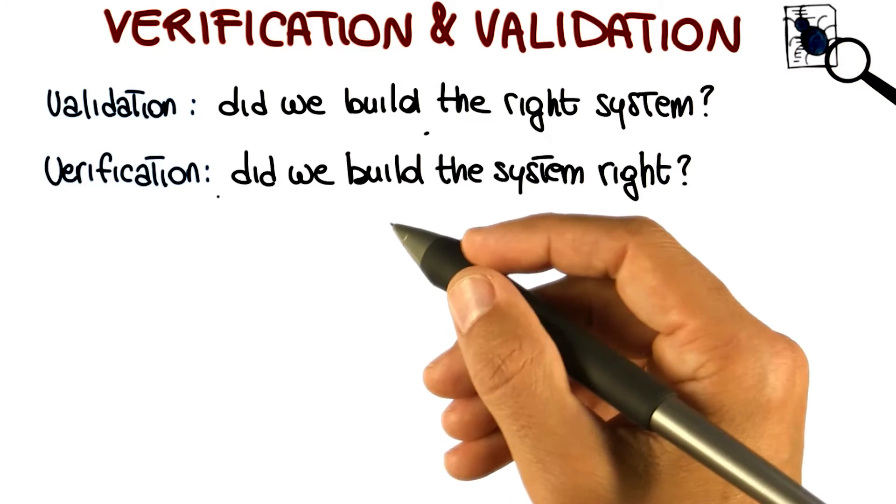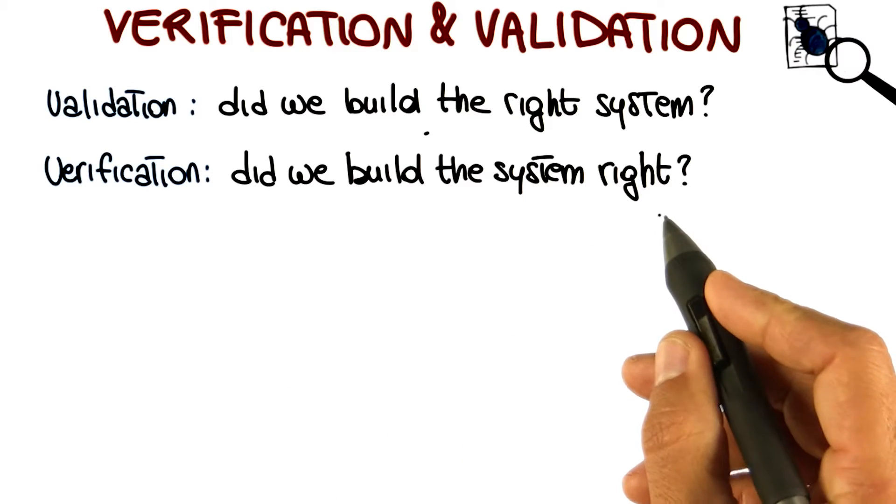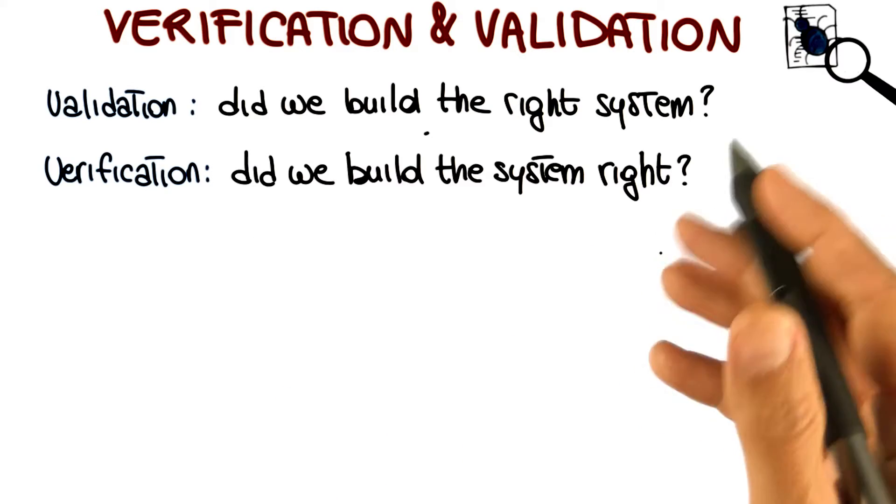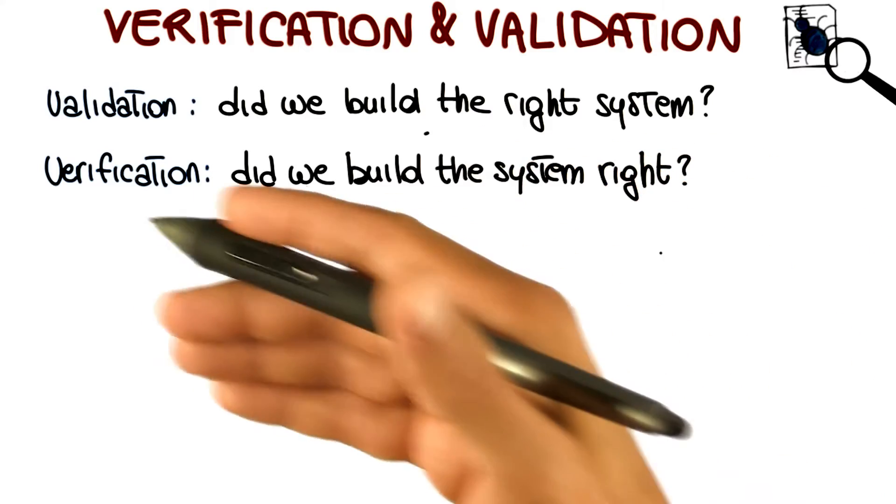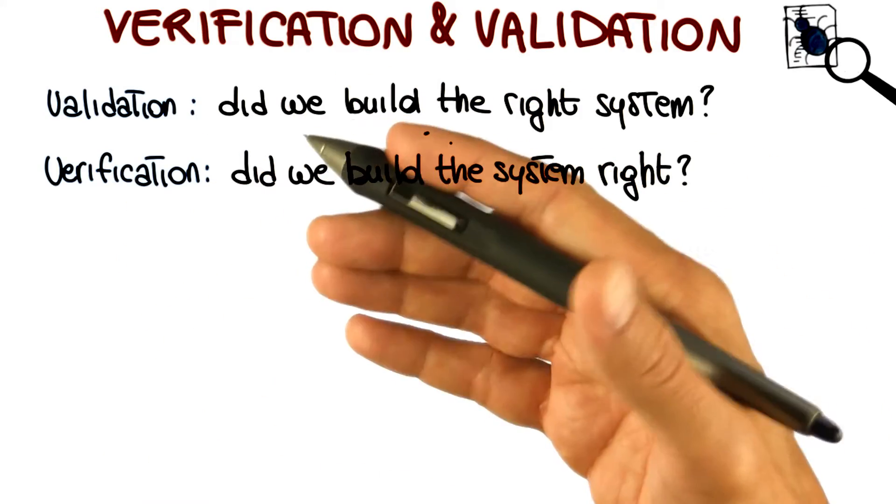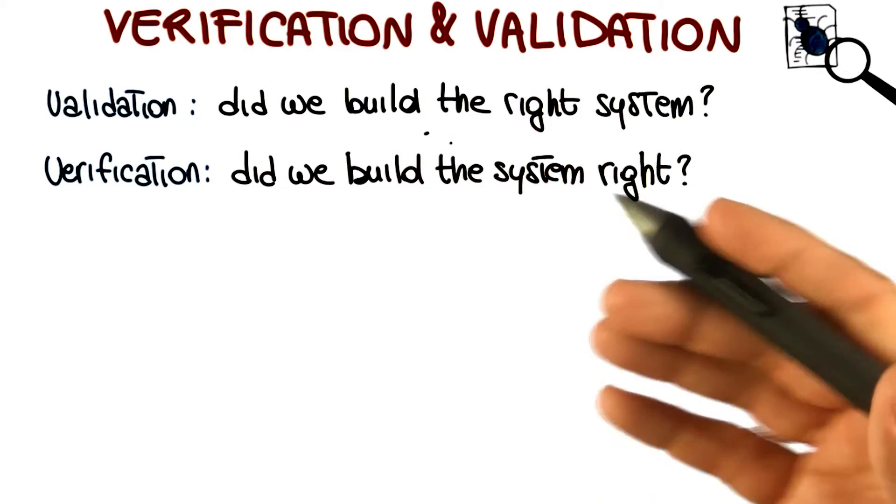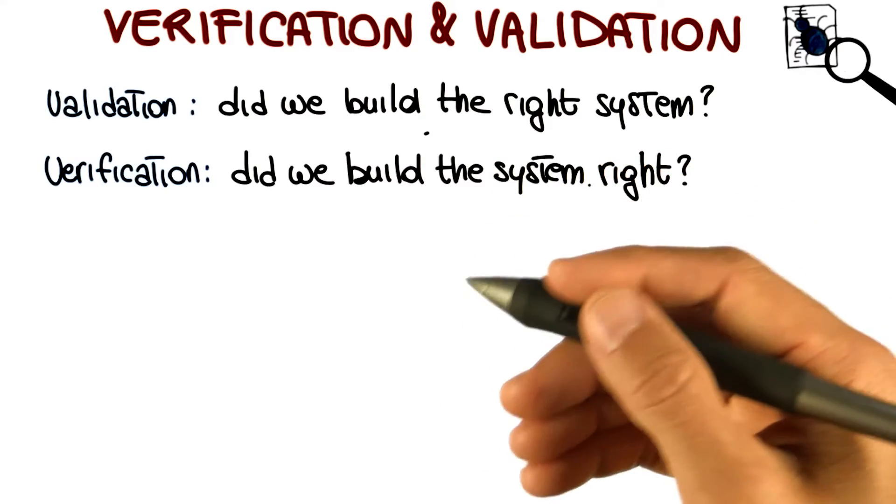Whereas verification answers a different question: did we build the system right? So given a description of the system, that is the one that we derived from the customer through the collection of requirements and then design and so on, did we build a system that actually implements the specification that we defined?